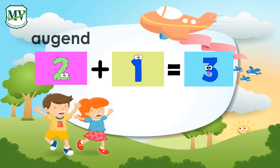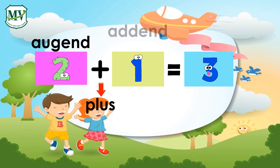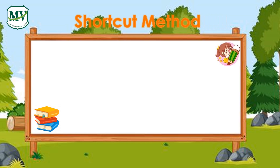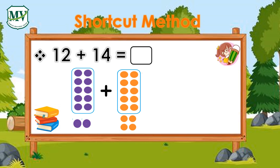These are the parts of addition: addend plus addend equals sum. Now, how to add numbers using the shortcut method. The shortcut method has three easy steps. For example, let's add 12 plus 14.